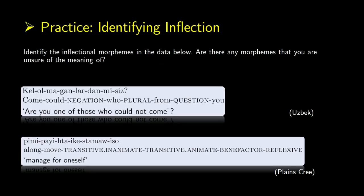Let's look at some sentences and identify the inflections. A key convention: inflectional glosses are written in all caps. In Uzbek, we have negation, the plural morpheme 'war', and question 'mi' — these are the inflections. In Plains Cree, we have transitive inanimate (VTA), transitive animate benefactive, and reflexive morphemes — several different inflectional morphemes. Even if you don't know what these mean, you can tell by the gloss whether they're inflectional or derivational by the all-caps convention used in linguistics.